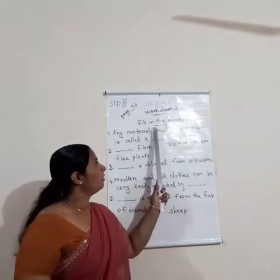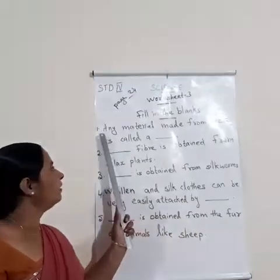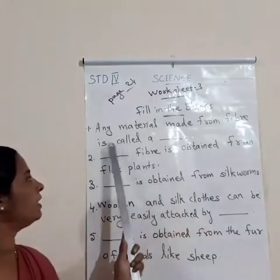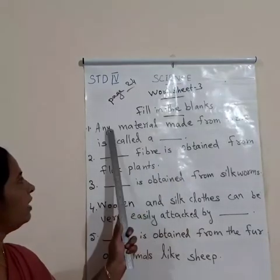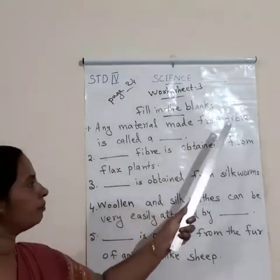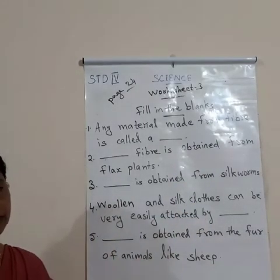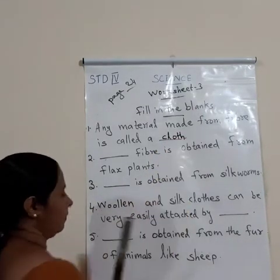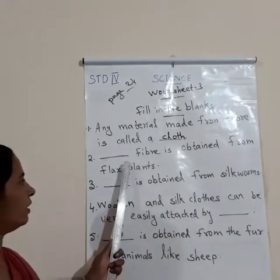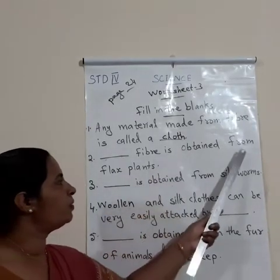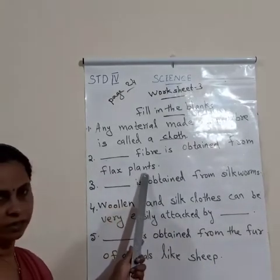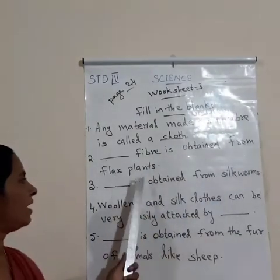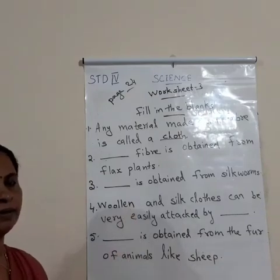Next question: fill in the blanks. First: any material made from fibre is called a blank — the correct answer is cloth. Second: blank fibre is obtained from the flax plant — the correct answer is linen.